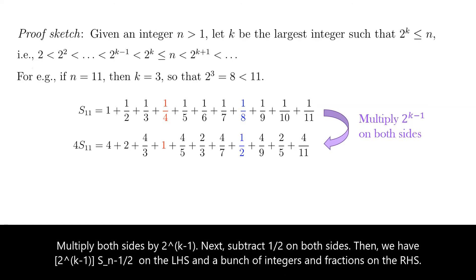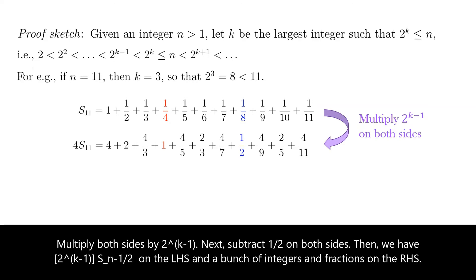Multiply both sides by 2 to the power of k minus 1. Next, subtract half on both sides. Then we have 2 to the power of k minus 1 multiplied by S_n minus half on the left-hand side, and a bunch of integers and fractions on the right-hand side.